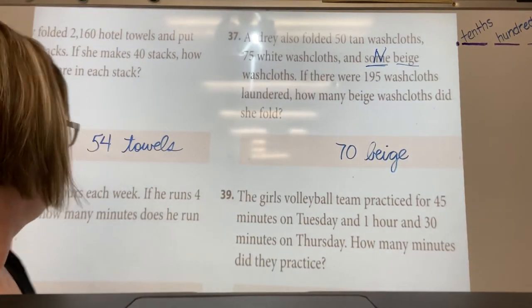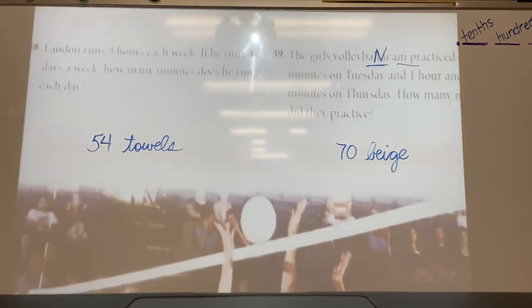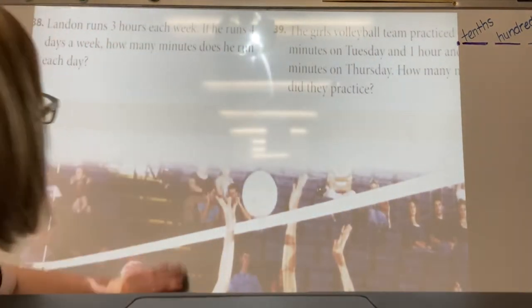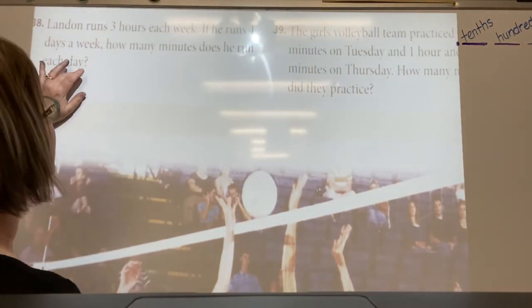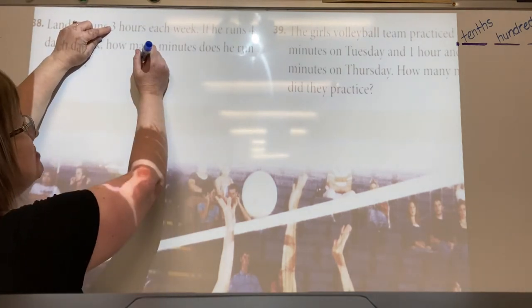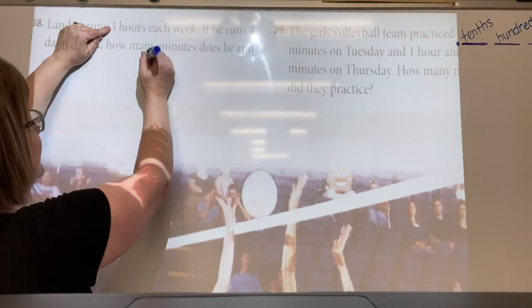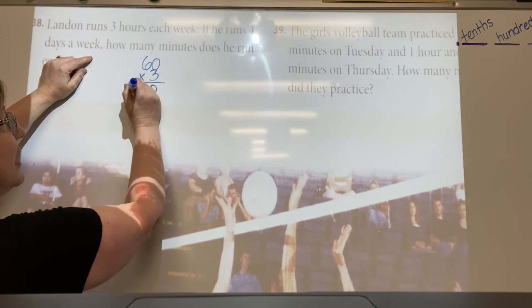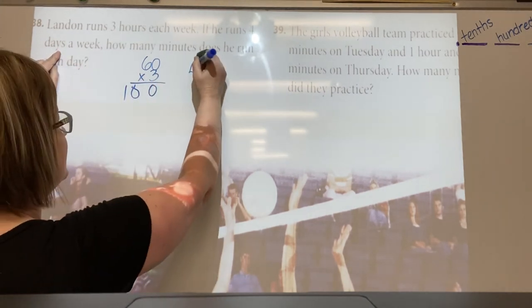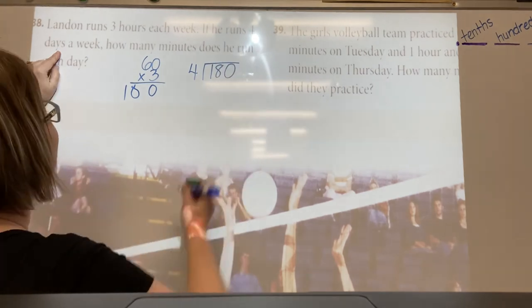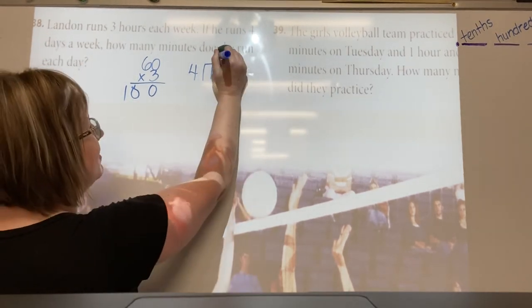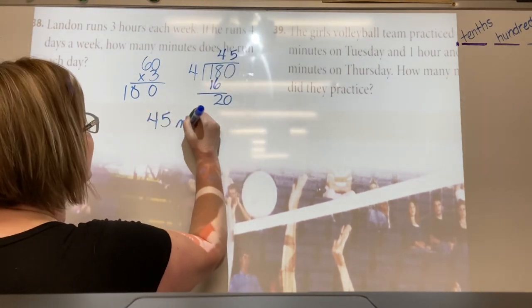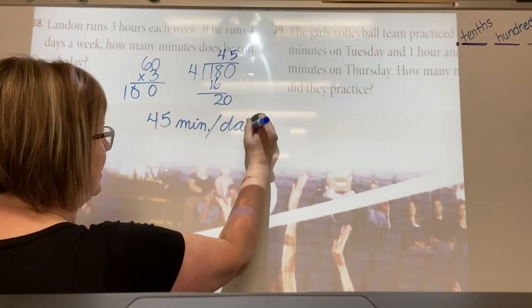Then we have number 38. Landon runs three hours each week. If he runs four days a week, how many minutes does he run each day? Three hours is how many minutes? How many minutes are in an hour? 60. So 60 times three gives you the total number of minutes, which would be 180. If he runs that in four days, then we're going to take 180 divide by four. That's 45, 45 minutes per day that he runs.